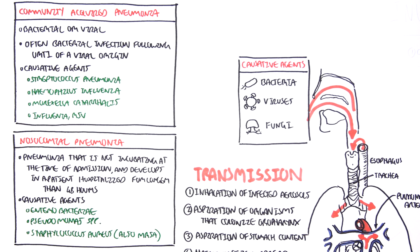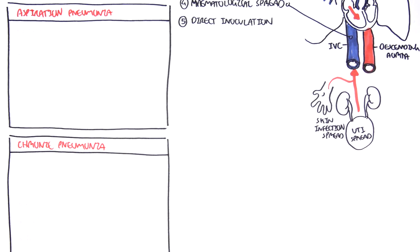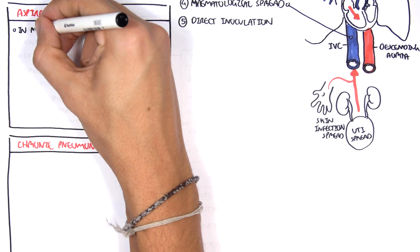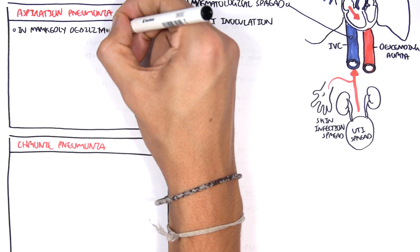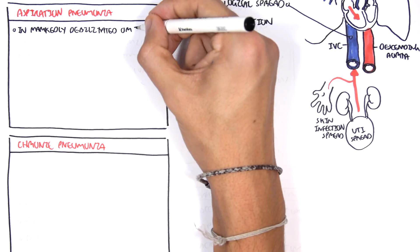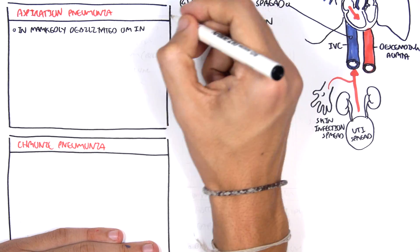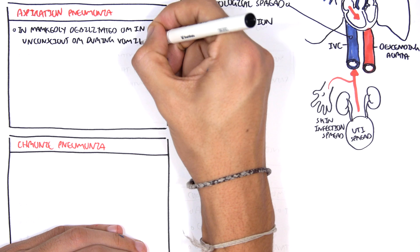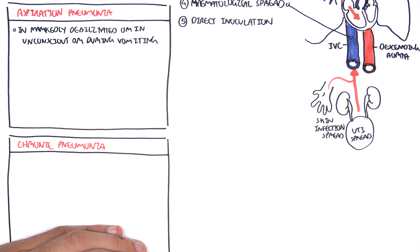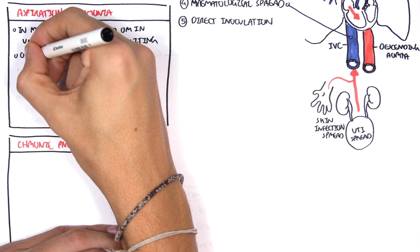Now aspiration pneumonia, which is also very common in hospital settings, so it can be kind of under nosocomial pneumonia. But aspiration pneumonia occurs in markedly debilitated or unconscious patients or during vomiting, when the patient is vomiting, because they can aspirate stomach content with bacteria. So aspiration pneumonia often leads to abscess formation, which is bad.